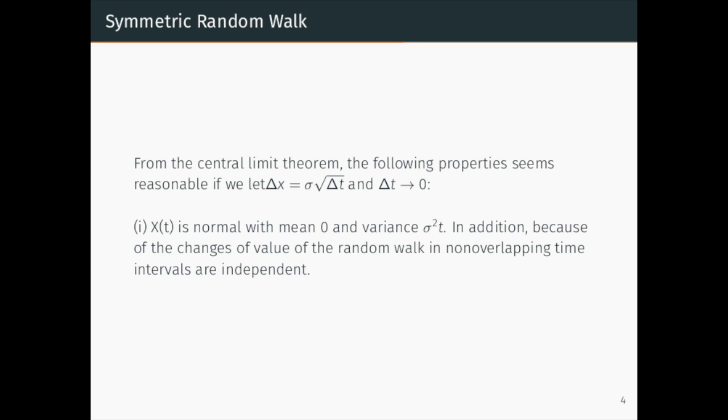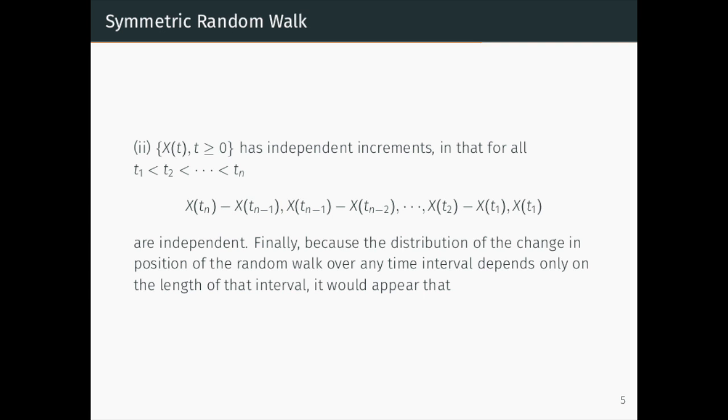In addition, because of the changes of value of the random walk in non-overlapping time intervals are independent, the second property is X(t_n) minus X(t_{n-1}), X(t_{n-1}) minus X(t_{n-2}), up to X(t_1) are independent.